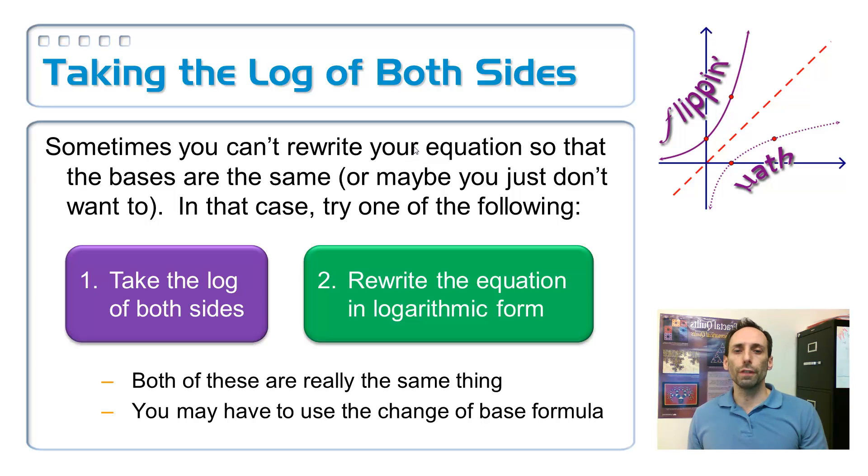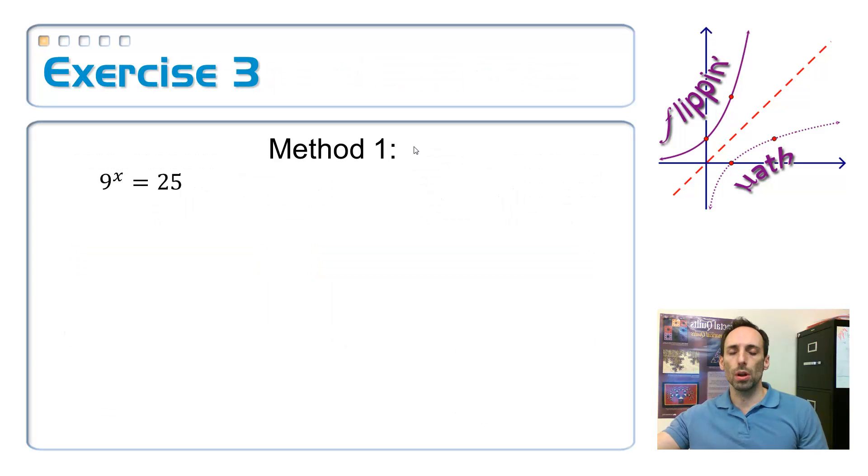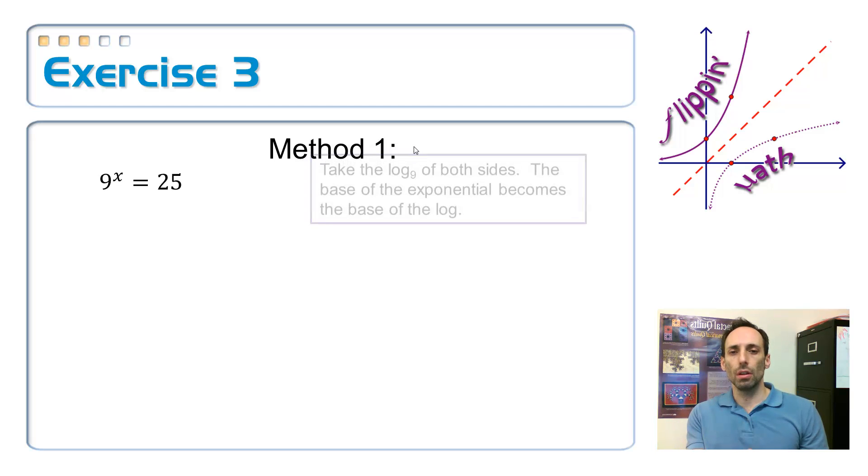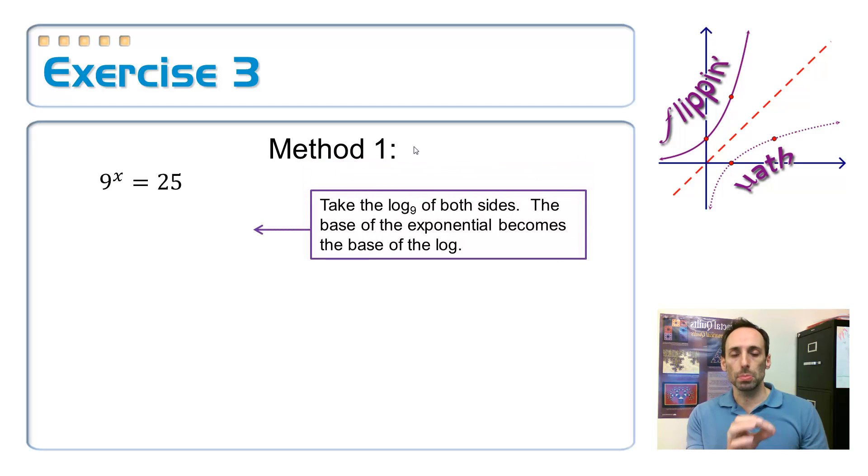So, here is the first method solving that previous problem. 9 to some power is equal to 25. Okay? So, the first method is just take the log of both sides, and specifically the log base 9, because that's what base that you have. So, on the left-hand side, you have log base 9 of 9^x is equal to the log base 9 of 25.